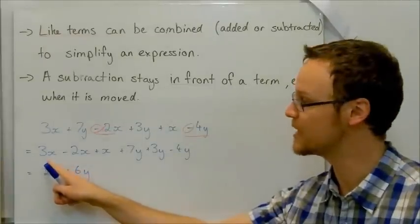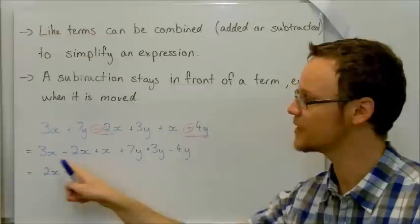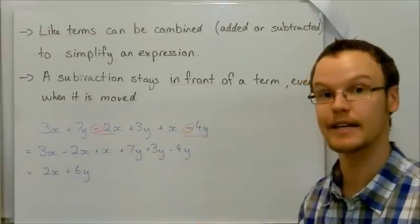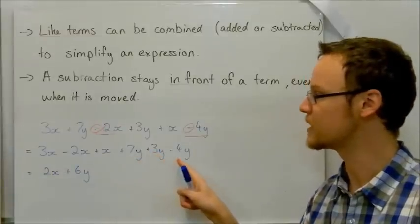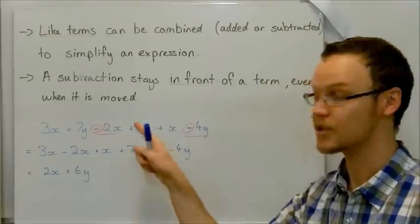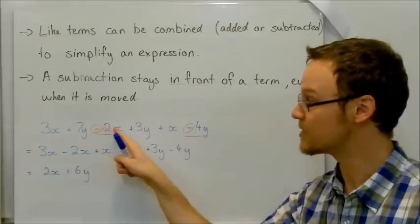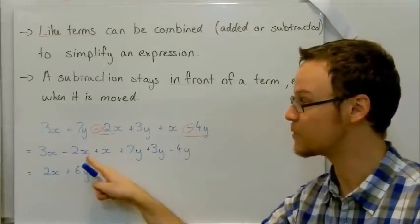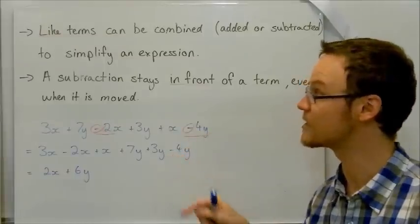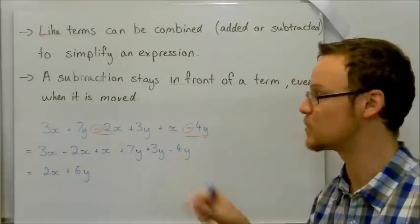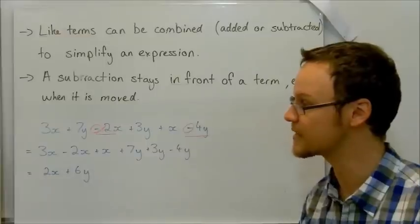So if we put all the x's together, we've got 3x minus 2x plus x. That's all of the x's that we've got in our expression. And here we've got all the y's. 7y plus 3y minus 4y. Just saying again, the minus has followed the 2x and come with it when we moved it. And the minus 4y, the subtraction sign has stayed with it.